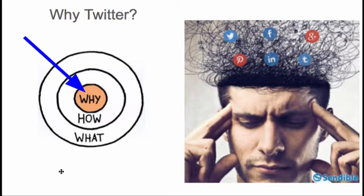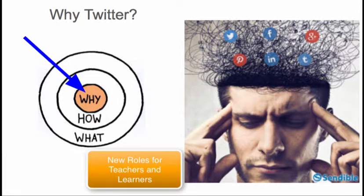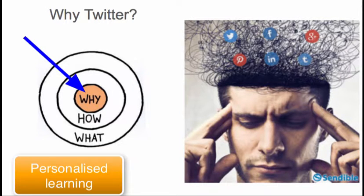Bolstead and Gilbert et al. unpacked the six themes of future-oriented teaching and learning in their 2012 paper. Three themes are relevant to using Twitter. The first is the desiloing of schools and new relationships with the community, national and global. The second is new roles for teachers and learners — that is, the teacher not necessarily leading the learning. And the third theme is personalised learning.